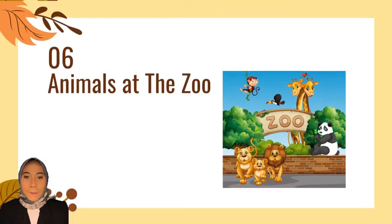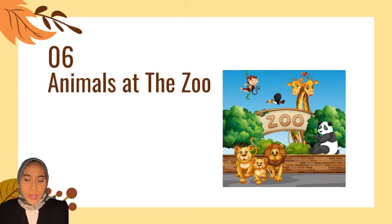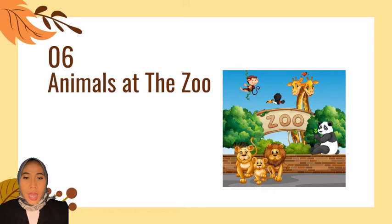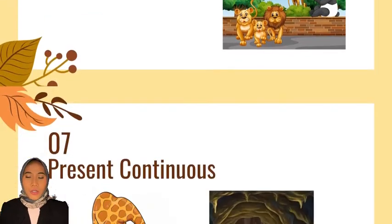Next lesson, we're talking about animals at the zoo. We will learn about kinds of animals found in the zoo, for example: panda, lion, tigers, tortoise, giraffes, elephant, alligator, hippo, monkeys, and others.